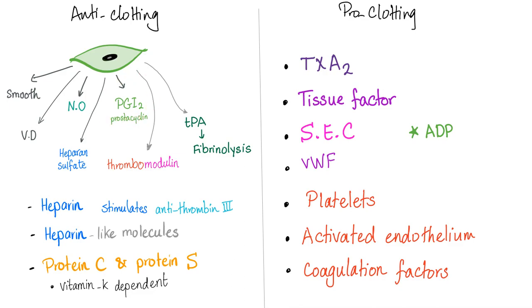Next is prostaglandin I2 — the prostacyclin, which keeps the blood cycling. It causes vasodilation and inhibits platelet aggregation. Thrombomodulin modulates thrombin from being procoagulation to being anticoagulation. And TPA converts plasminogen into the active plasmin, causing fibrinolysis.